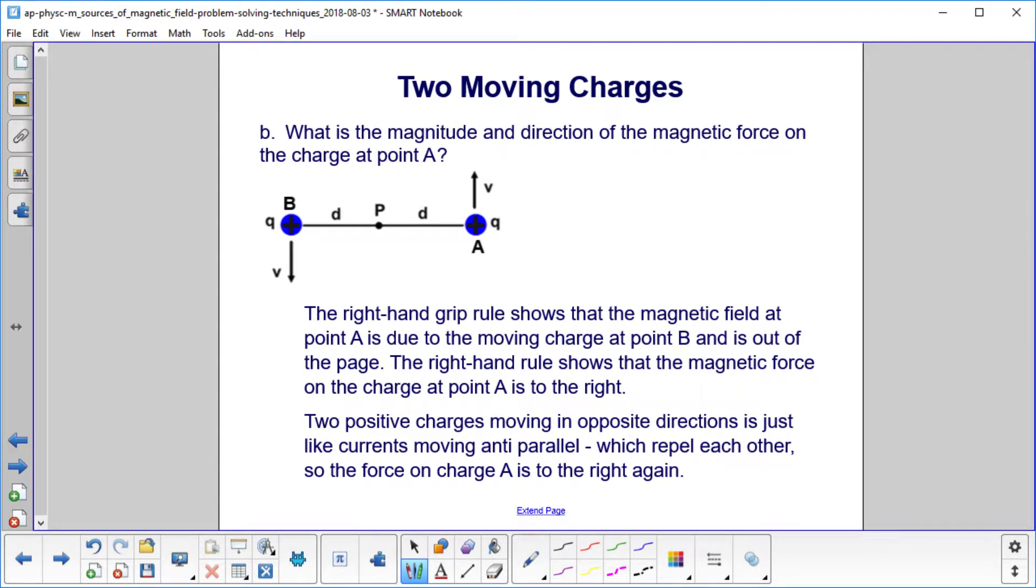What is the magnitude and direction of the magnetic force on the charge at point A? What we're going to do is do this in two ways. First, the formal way.